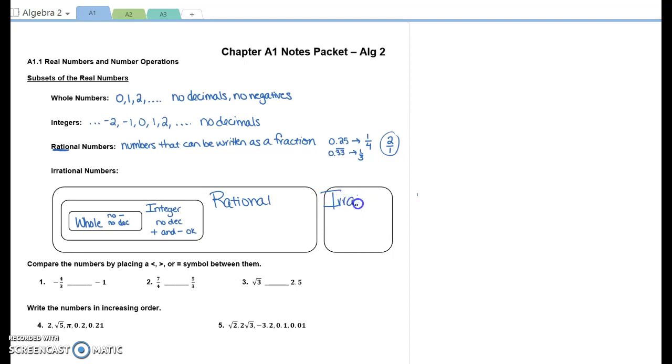Anyone want to take a guess what this other box is for? Irrational numbers. Irrational numbers. And how about a guess what an irrational number is? If rationals are fractions, decimals that can't be written as a fraction. One of the most famous irrational numbers is pi. Pi is a symbol that represents the number 3.14159 and it keeps on going and going and going. The decimal does not terminate. It does not repeat. It keeps going and going and going. There's no way to change that into a fraction. So it's an irrational number.